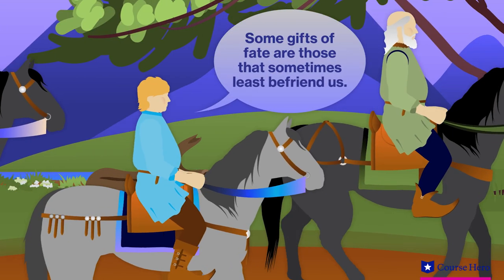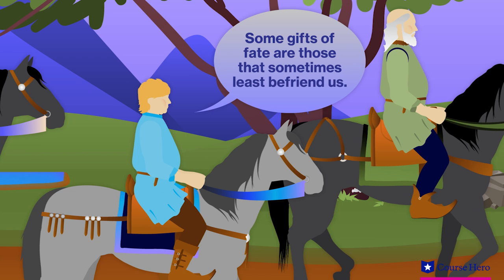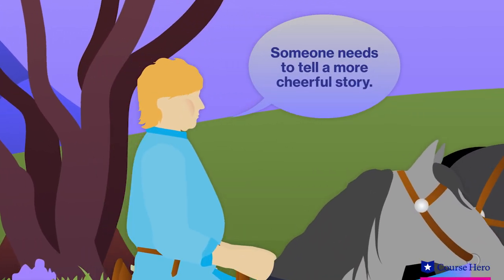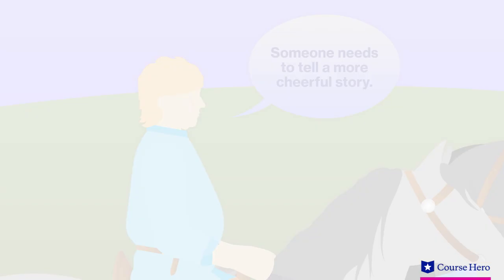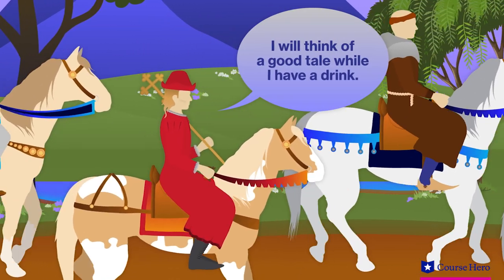Harry Bailey points out the gifts of fate, such as great beauty, sometimes least befriend us. Then he says he needs someone to tell a more cheerful story and calls on the pardoner. Some members of the company demand a tale with a moral. The pardoner says he will think of a good tale while he has a drink.